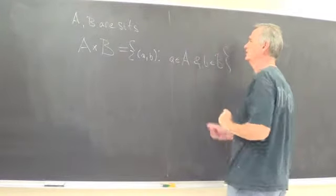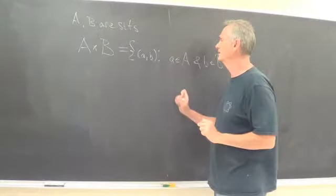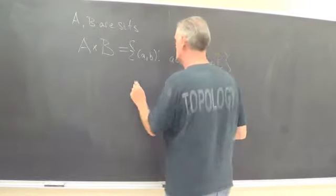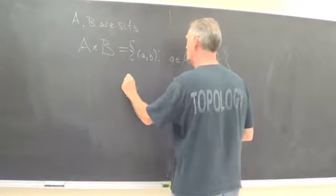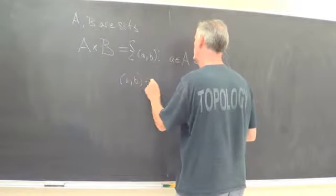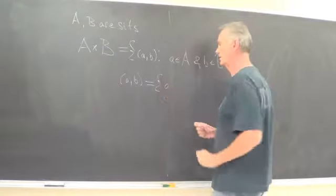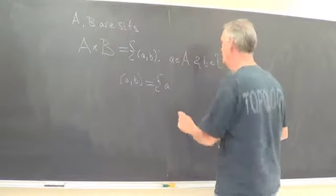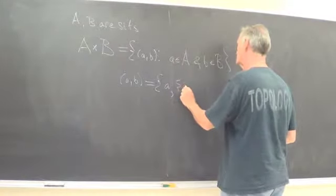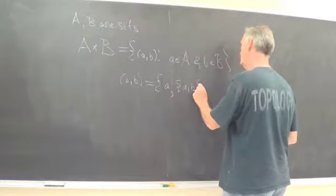And I need to tell you what I mean by an ordered pair, and this one is also a subtle definition. So the ordered pair A, B is going to be the set that consists of two elements. One of the elements is A, and the other element is the set consisting of A and B.